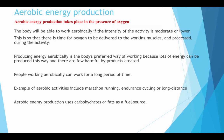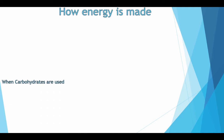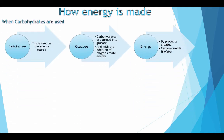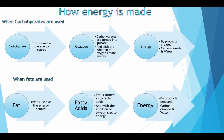Aerobic energy production uses carbohydrates or fats as the fuel source. When carbohydrates are used: carbohydrates are turned into glucose, and with the addition of oxygen, create energy. One of the by-products is carbon dioxide and water. When fats are used: fat is used as the energy source, which creates fatty acids, and with the addition of oxygen, creates energy. The by-products are again carbon dioxide and water.